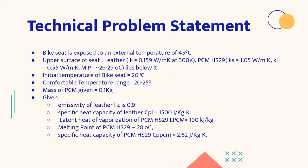So here is our technical problem statement. Consider that the bike seat is rectangular and is exposed to a surrounding temperature of 45 degrees Celsius. The upper surface of the seat is made of leather. That is a thin layer of leather of conductivity k, and below it lies a phase change material HS29. Consider the initial temperature of the bike seat before it is taken in the hot sun to be 20 degrees Celsius. It is proposed that the bike seat temperature stays in a range that is comfortable for the biker, that is 20 to 25 degrees Celsius for a particular amount of time.